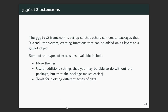Some useful additions can be in terms of new geoms you can use. In some cases they're helping with scales like color scales, and we'll look at some examples of that. And in general, some tools for plotting different types of data. So if you have data for a network or genomic data or gene expression, there are specific things that might work well with those specific types of data.